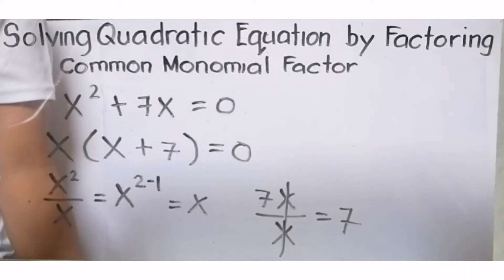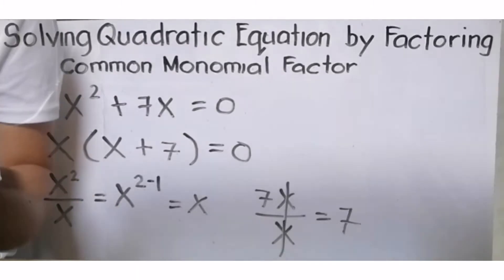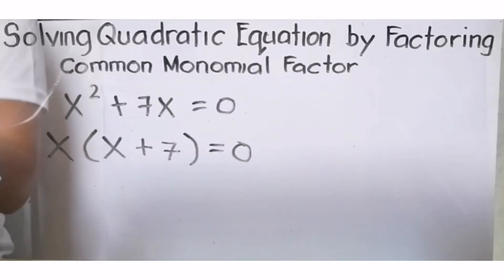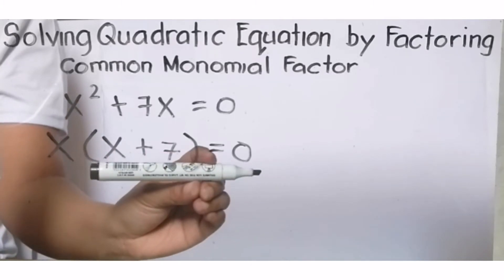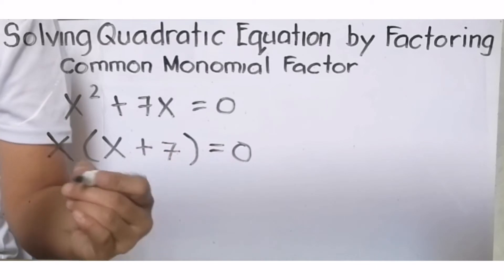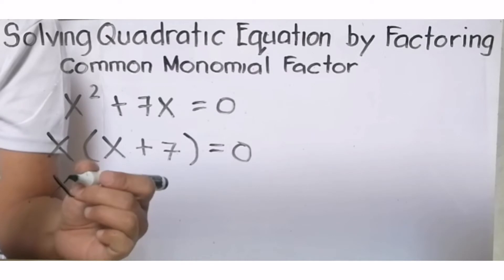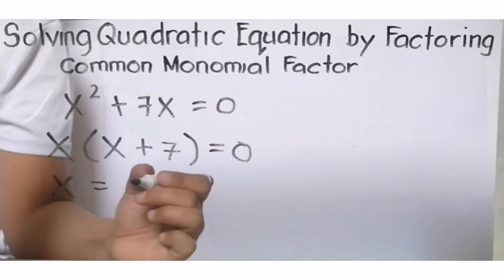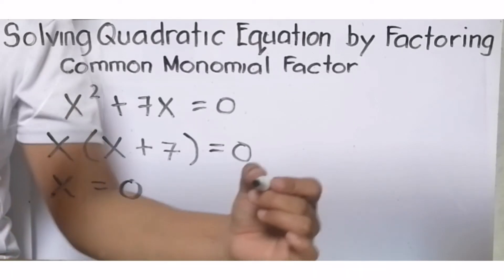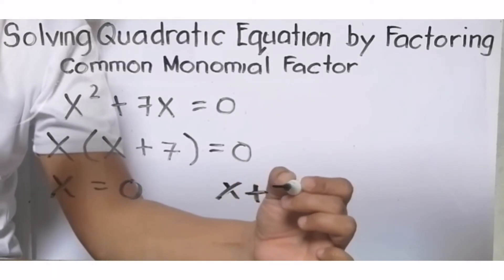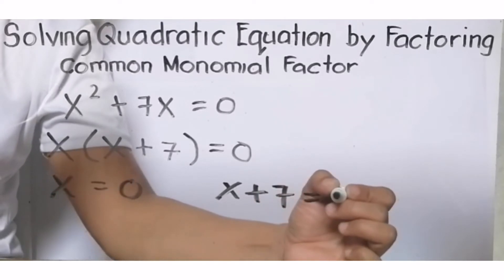Ngayon, ready na tayo to solve the quadratic equation. Ang i-apply natin dito ay splitting muna. Let us split the factors x and x + 7, then equate it to 0. One of the factors is x, equate it to 0. And the other one is x + 7, equate it to 0.